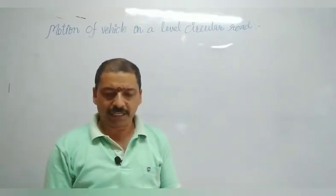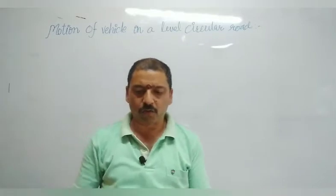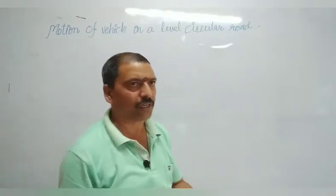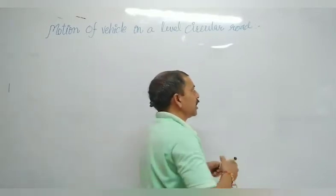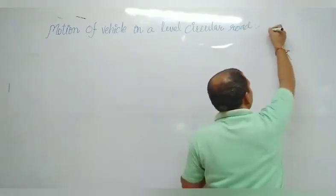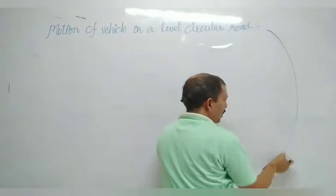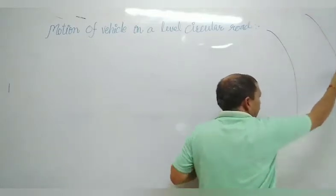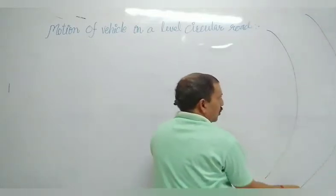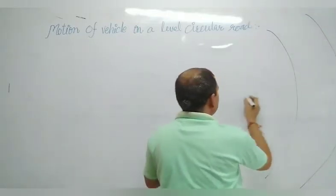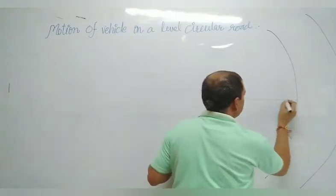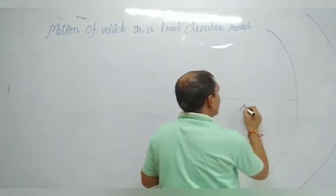If there is a level circular road, how will the motion of a vehicle be done? Let us suppose that we are having a road like that — it is a level circular road which has a radius R.